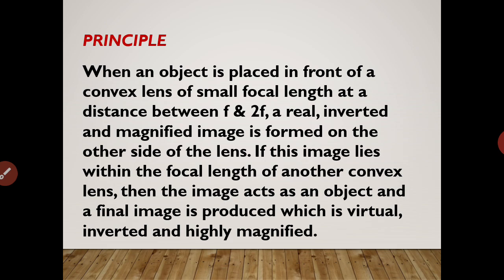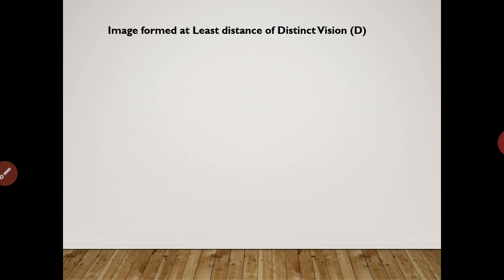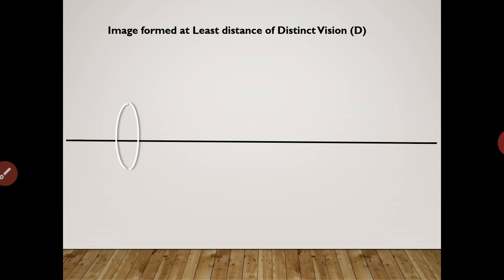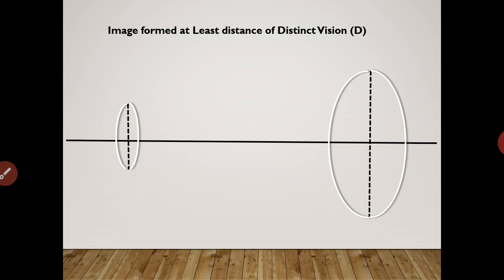Now let us see how we go stepwise to draw the ray diagram. This is the image formation at the least distance of distinct vision, that is at 25 centimeters. Let's draw a principal axis with convex lens 1 and lens 2 — they are of different aperture as shown. C1 and C2 are the optical centers of the lenses respectively. We mark the focus.